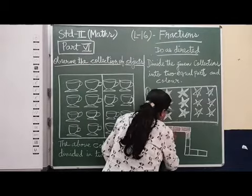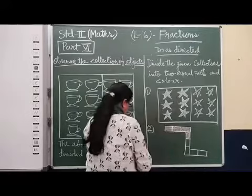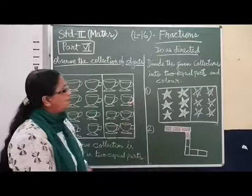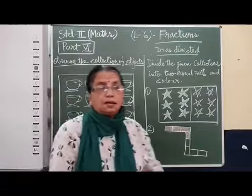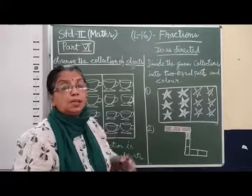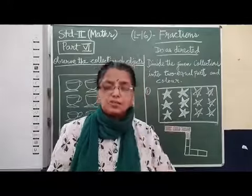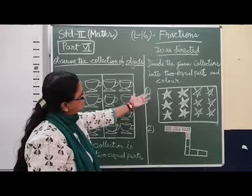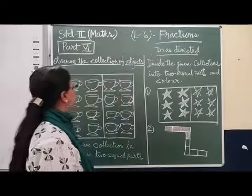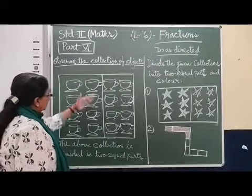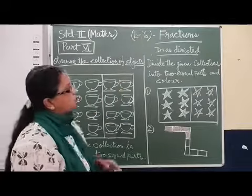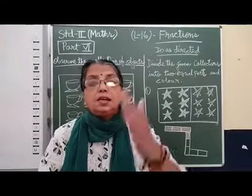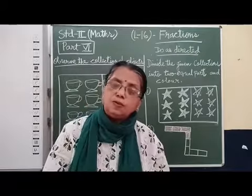Yes, after coloring we will outline, draw the outline. So children, this is called equal distribution in a collection. This is also fraction. If you write here, half of the collections are colored here, half of the collections are colored here. So this way, in the fraction, in the group also, we have to make half, one-third, one-fourth.